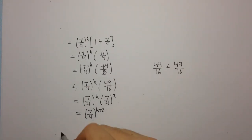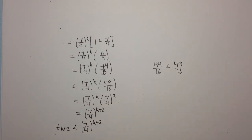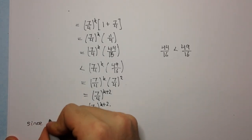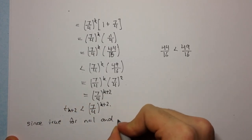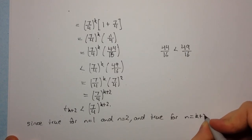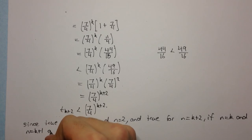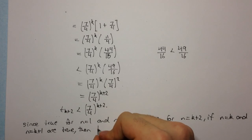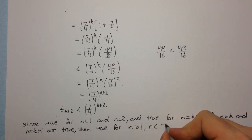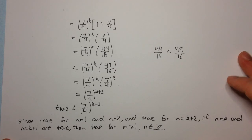So we can say that t_{k+2} is less than (7/4)^{k+2}. Now we give our final statement: since it is true for n equals 1 and n equals 2, and true for n equals k+2 whenever n equals k and n equals k+1 are true, it is true for all integers n greater than or equal to 1. That's the end of part 2, and part 3 will be done in the next video.